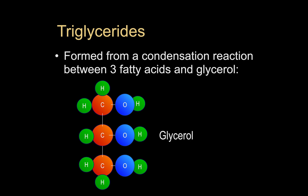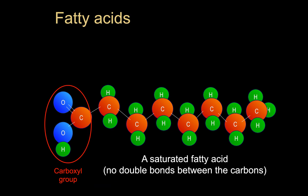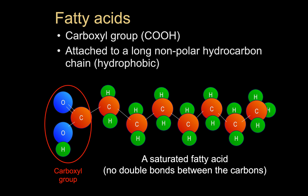Here we have the glycerol, and these are structures that you're going to need to be able to recognize. The fatty acids that bind with the glycerol to form a triglyceride have a variety of different structures. A saturated fatty acid has no double bonds between the carbons in the chain — that's the chain on the right-hand side of this structure. On the left-hand side, circled here in red, is a particular chemical group known as a carboxyl group. That long chain of carbons with no double bonds is what makes this a saturated fatty acid.